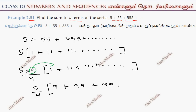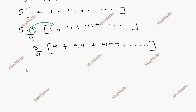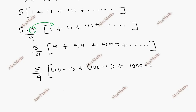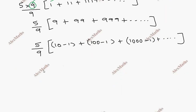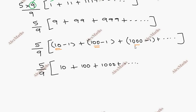So this becomes 5 by 9 times the series 9 plus 99 plus 999 plus dot dot dot, which we can rewrite as 5 by 9 times the series (10 minus 1) plus (100 minus 1) plus (1000 minus 1) plus dot dot dot.